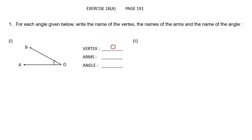The two rays are the arms of this angle. The arms are OA and OB. How do we name the angle? We name the angle with three letters AOB or BOA, keeping in mind that the letter O comes in the middle — the letter which names the vertex comes in the middle. So angle AOB or angle BOA.